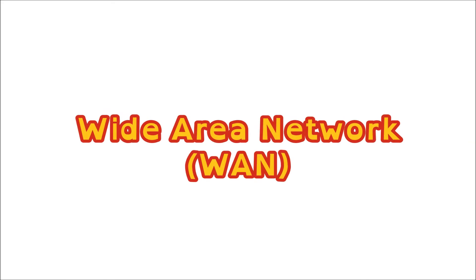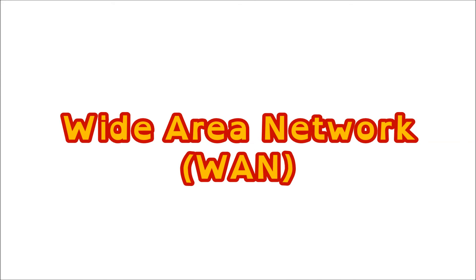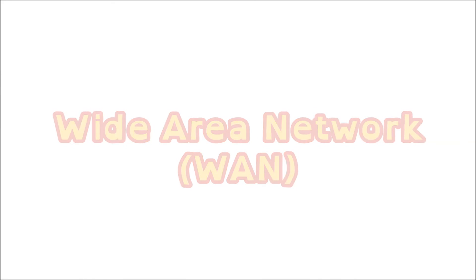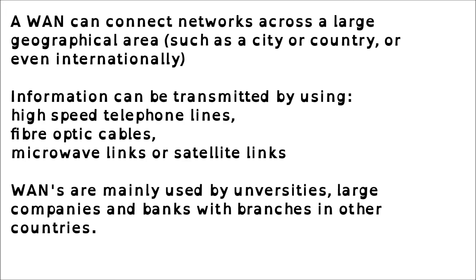Wide Area Network, or WAN. A WAN can connect networks across a large geographical area such as a city, country, or even internationally. Information can be transmitted by using high-speed telephone lines, fibre optic cables, microwave links, or satellite links. WANs are mainly used by universities, large companies, and banks with branches in other countries.